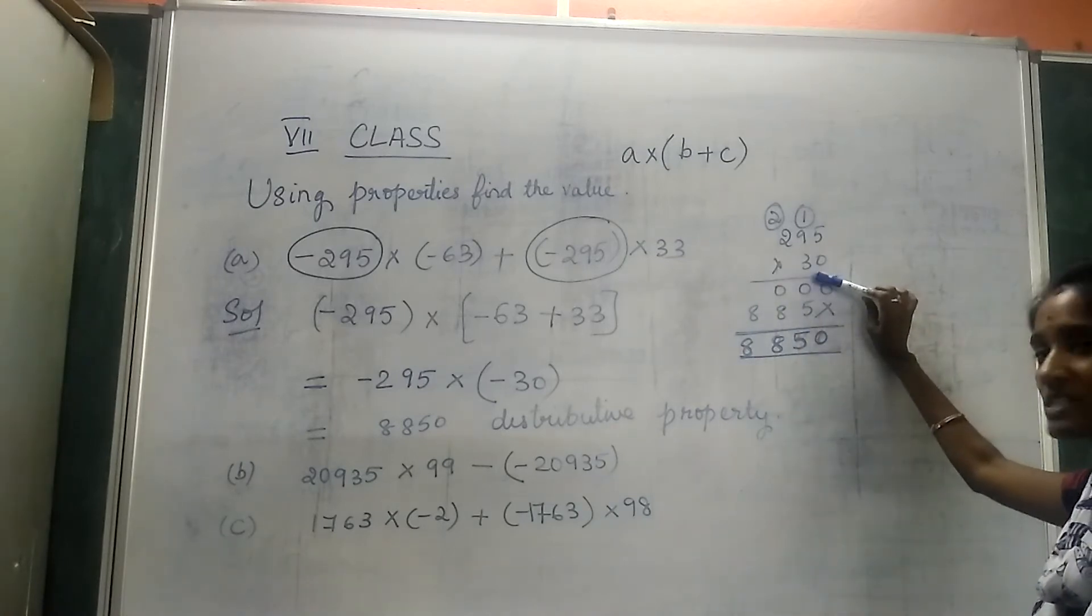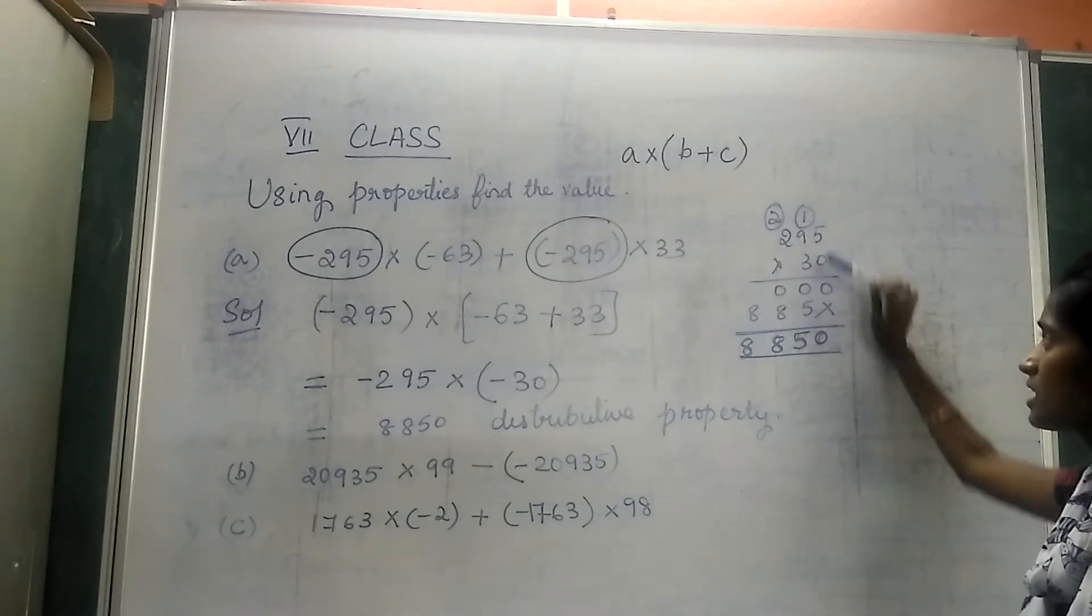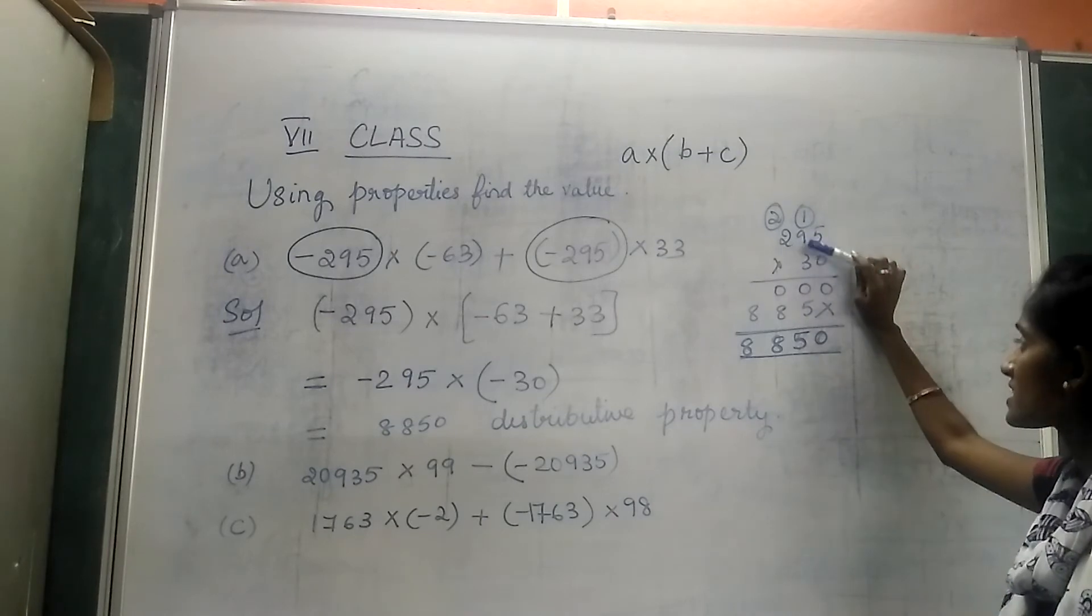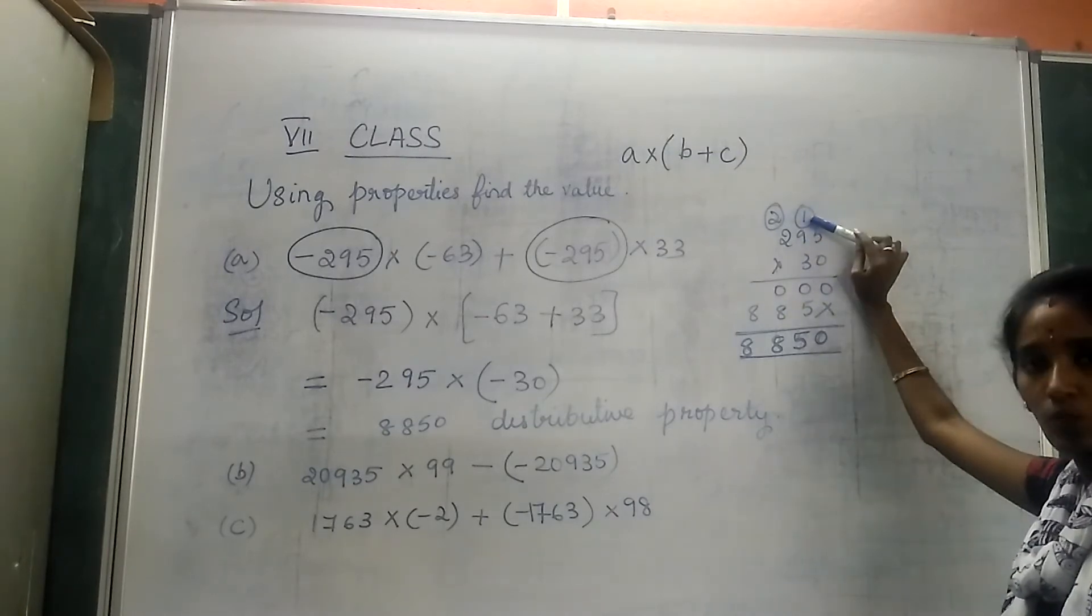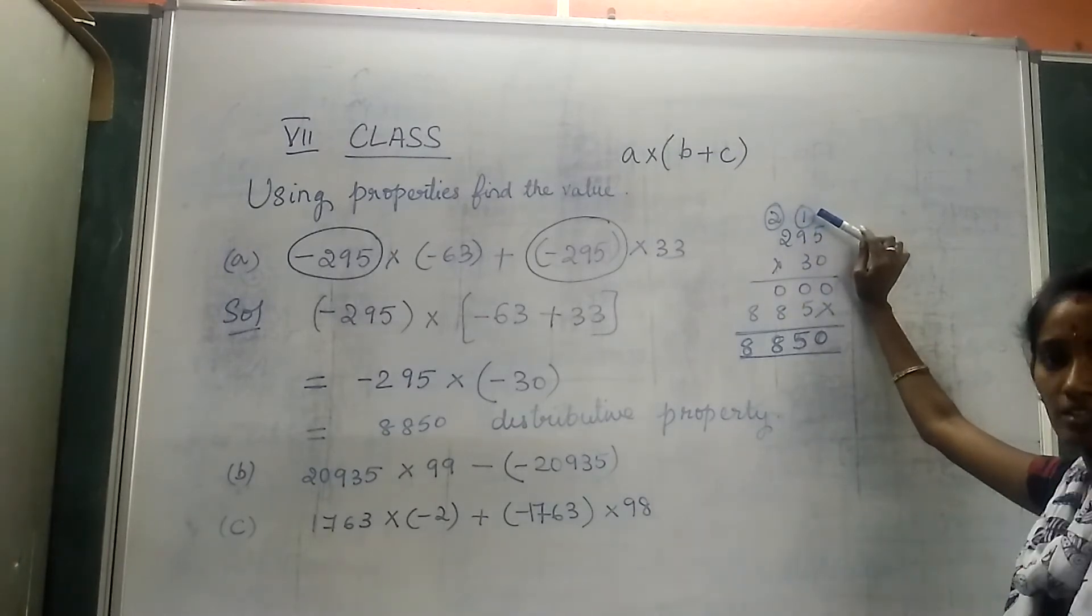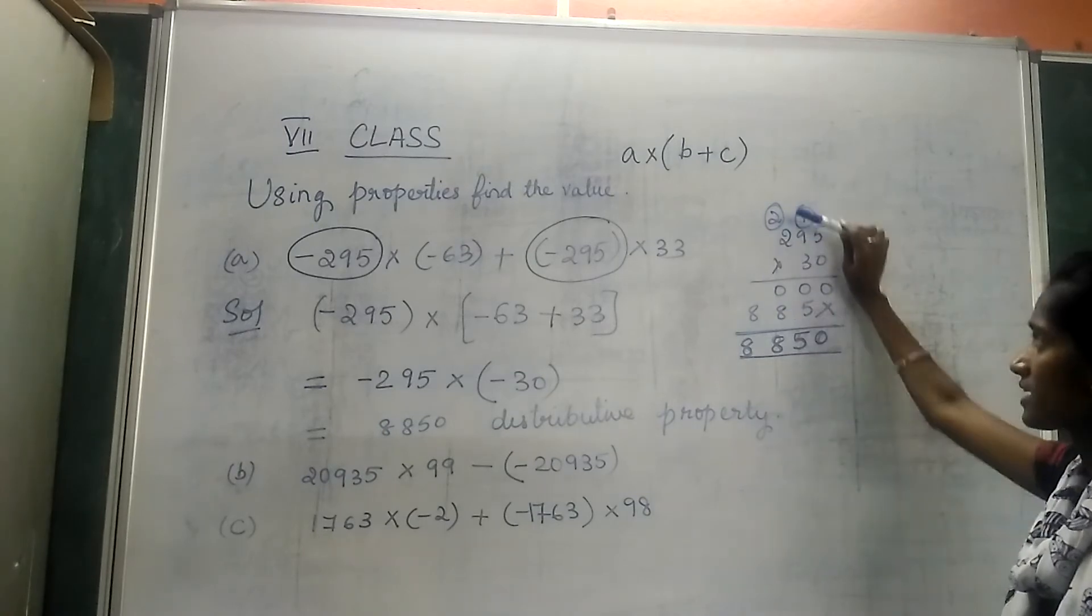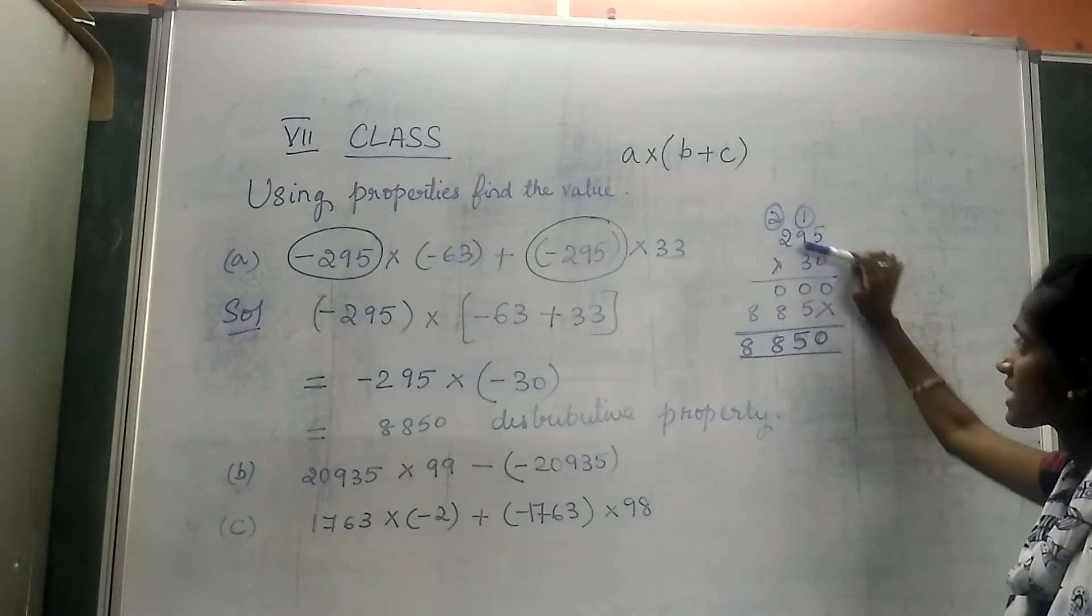Next coming to the next step, that is 3. 3 × 5 is 15. 3 × 9 is 27, and here is 1, so 28. Let's add it: 8 and 2 carry here again. 3 × 2 is 6, 6 + 2 is again 8.